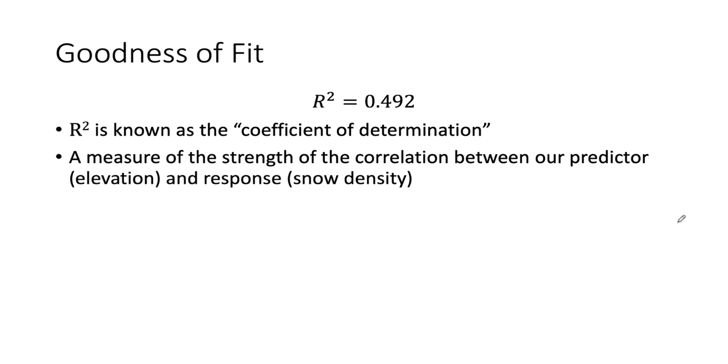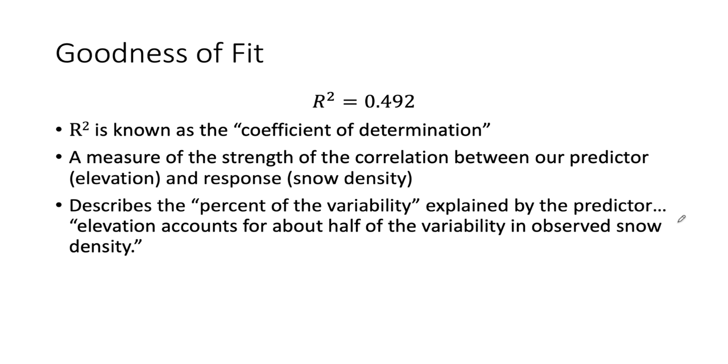And the way that we usually describe the magnitude of that correlation is as kind of the percent of the variability or the percent of the variance in our response variable that is explained by the predictor. So if I had done this calculation, if I had presented this in a slide at a scientific meeting, I would, for instance, say something like in our data elevation accounts for about half, 0.492 is about half or 50% of the variability in our observed snow density data. So elevation explains about 50% of the variability in snow density.